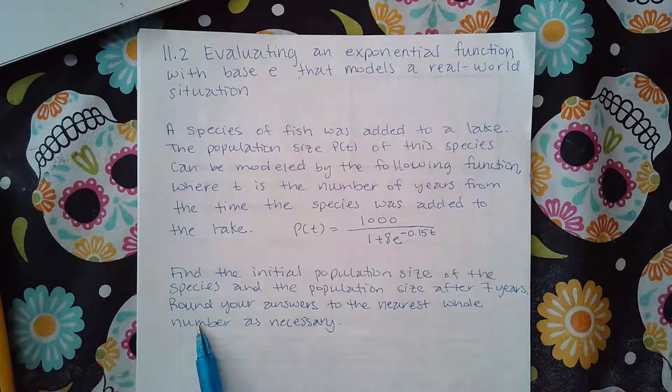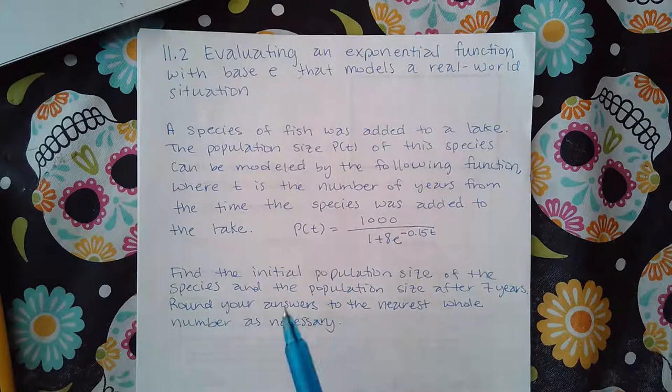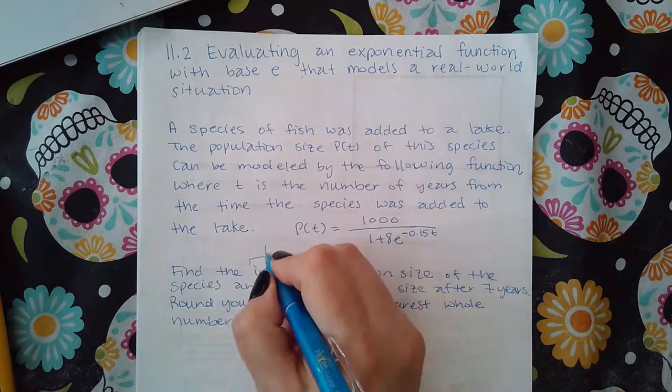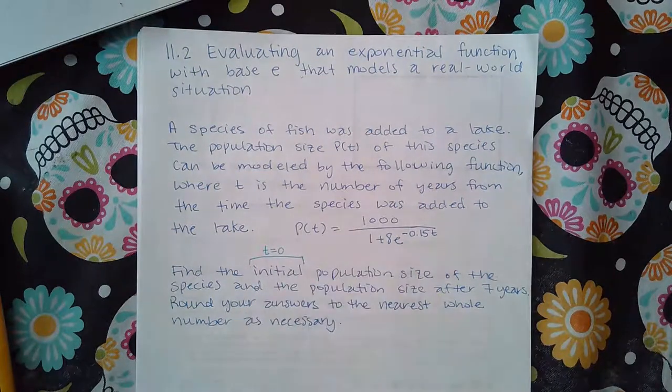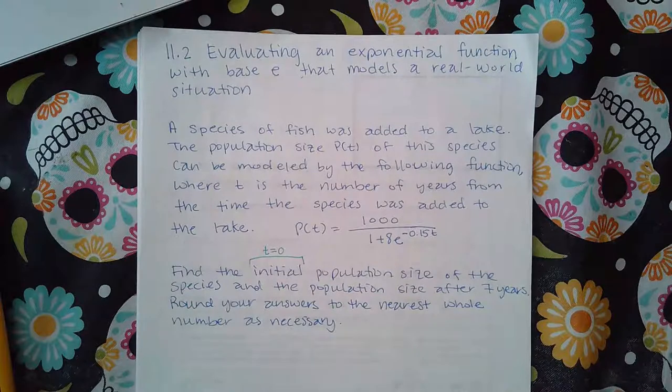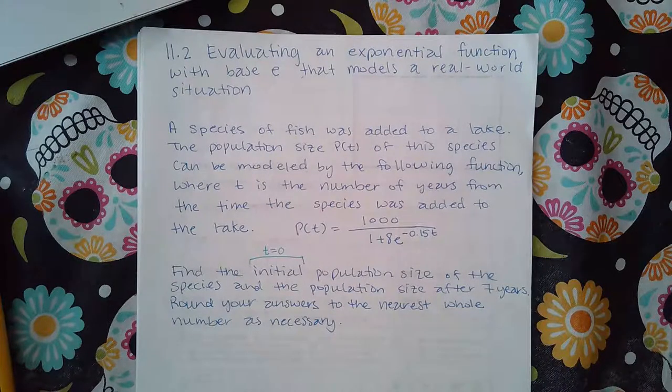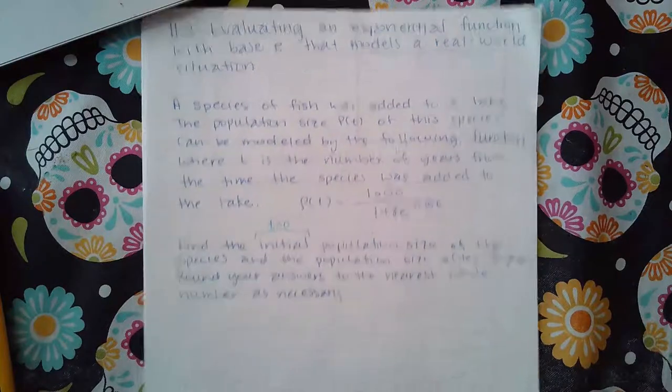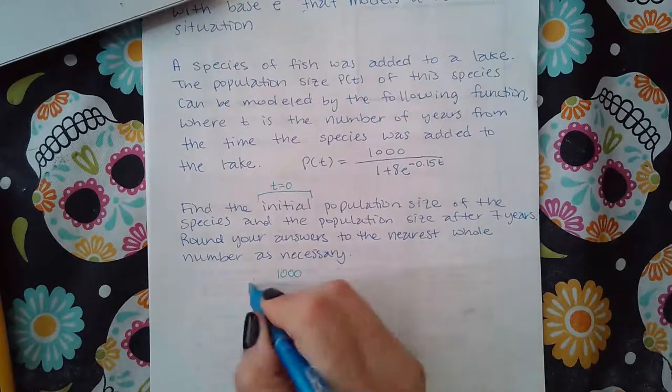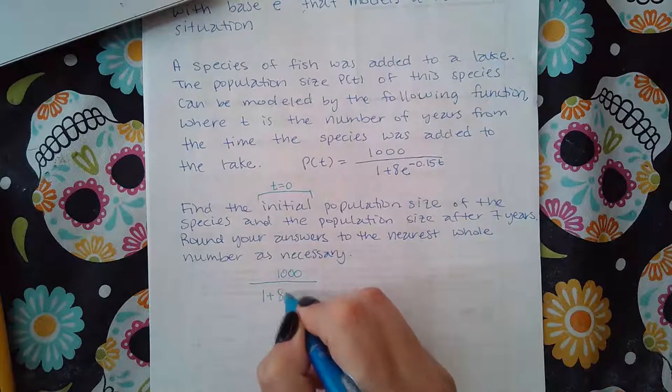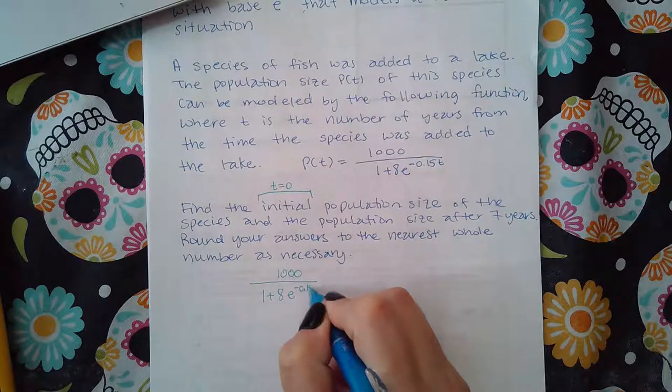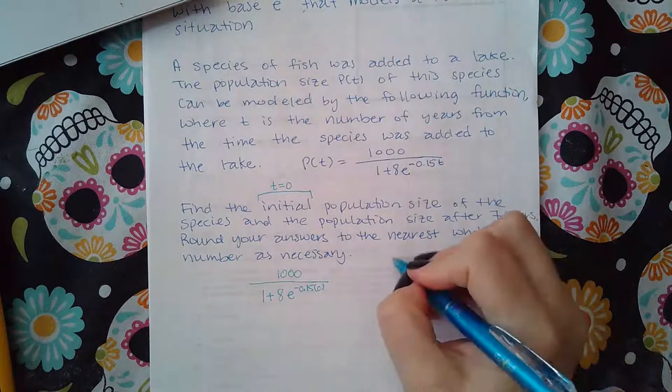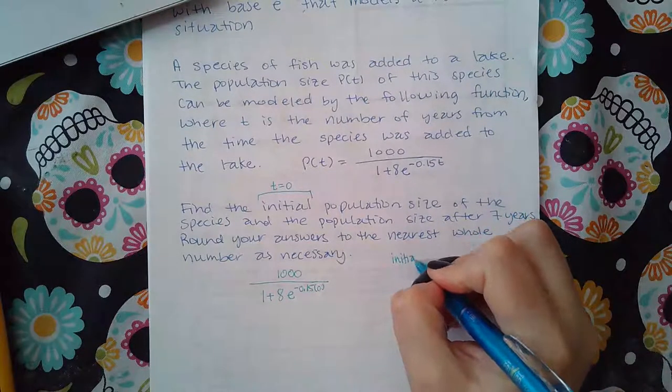If they're asking you for the initial anything, that means that the time that has passed is zero: zero years, zero days, zero seconds. That is right now, what's happening. So if I find out that value, that means I'm going to take my expression for P and plug in zero. So the initial population will be whatever it is I find.